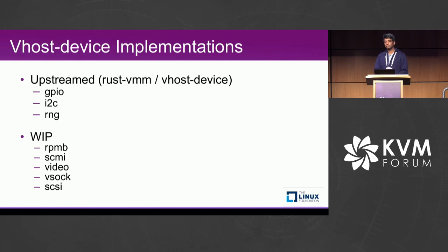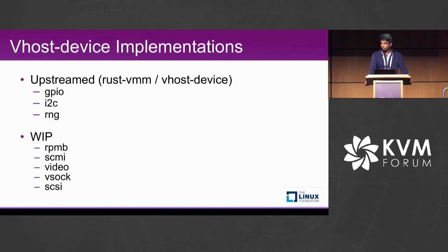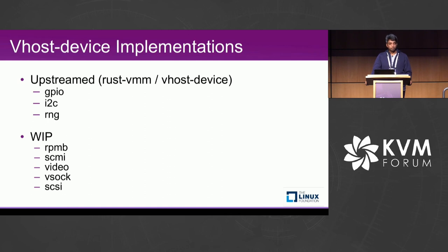When we started, the Rust VMM project did not have a specific crate for device implementations or emulations. So we created a vhost-device crate ourselves. It is currently maintained by Linaro employees — Alex, myself, and Matthew Poirier. We have already upstreamed several devices: GPIO, I2C, and a random number generator. Others are still in progress — RPMB, SCSI, and VSOCK have pull requests for Rust support, while SCMI and VDO are C-based right now and we are looking to migrate them to Rust as well.